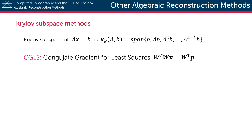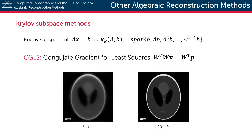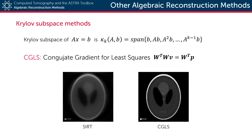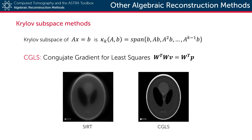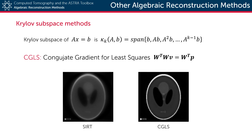In the case of tomography, CGLS, or conjugate gradient least squares, is the most popular Krylov-based reconstruction technique. It solves the normal equations of our algebraic tomography model using a conjugate gradient approach. In general, it converges to a solution much faster than SIRT, but it does have a large memory footprint.